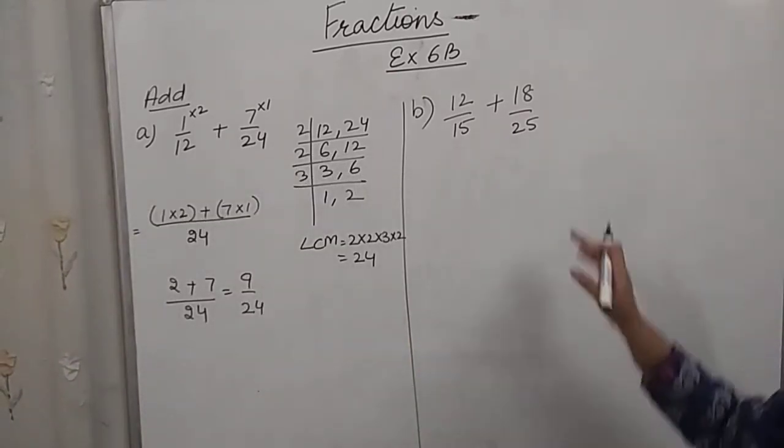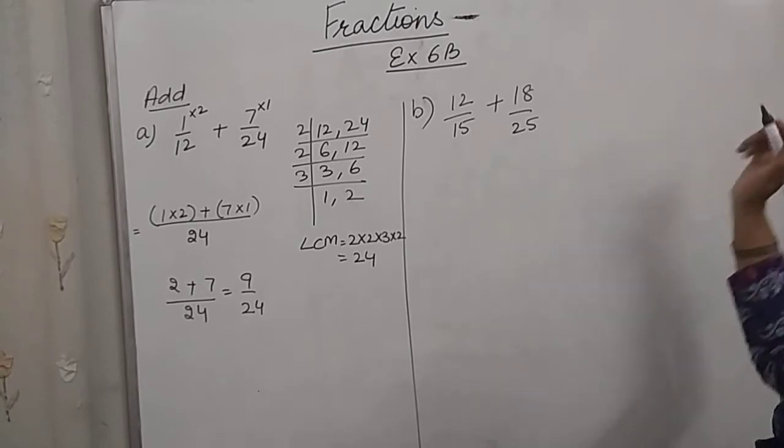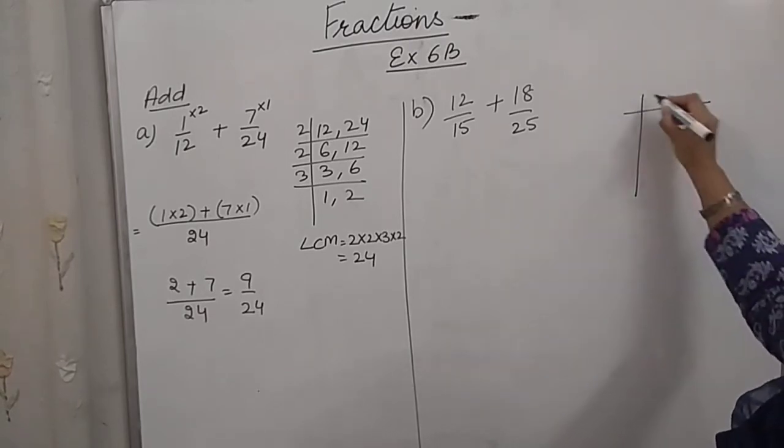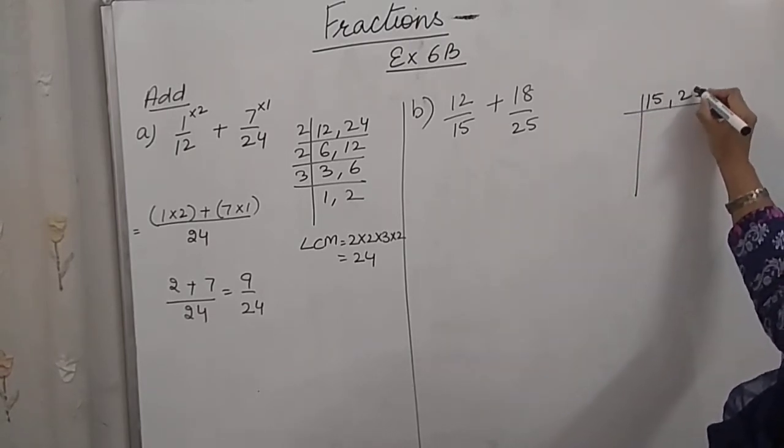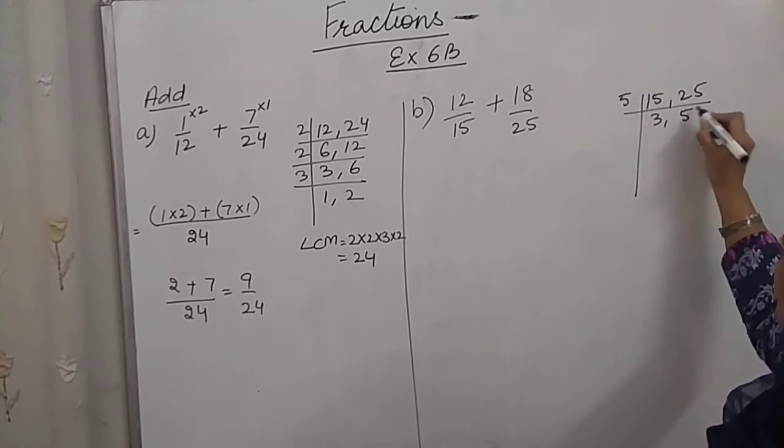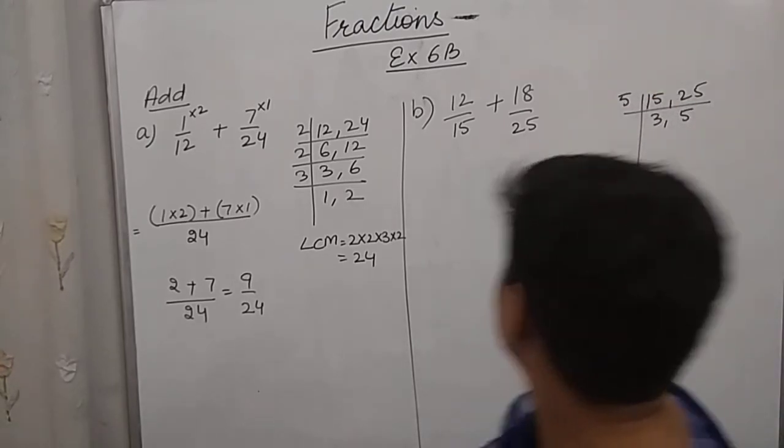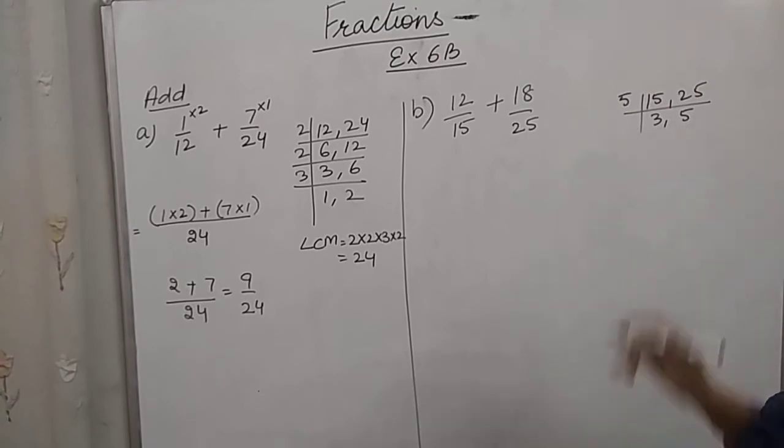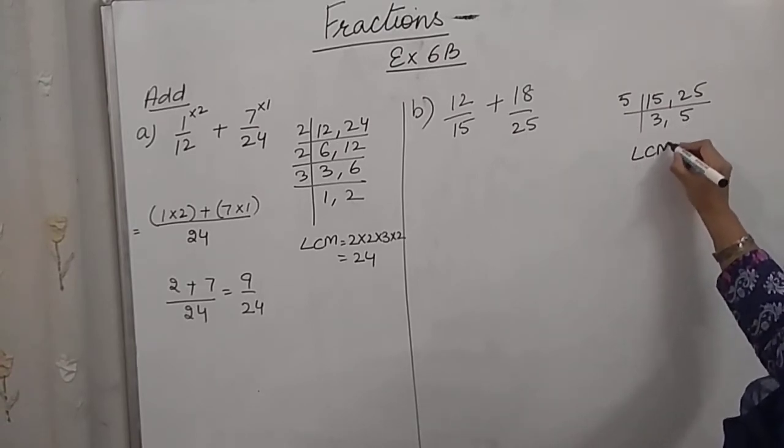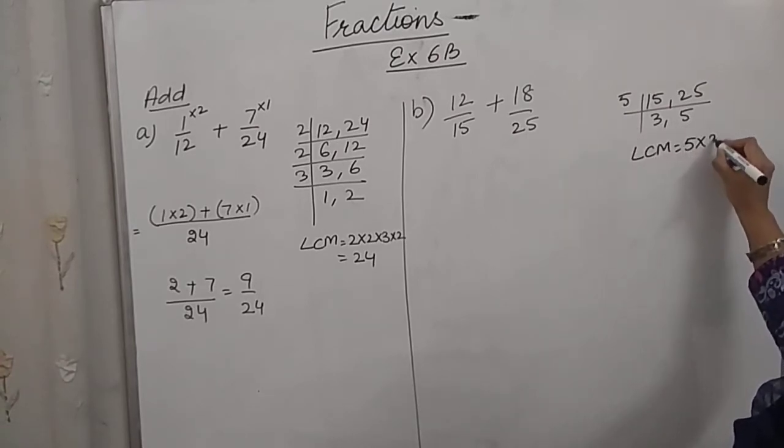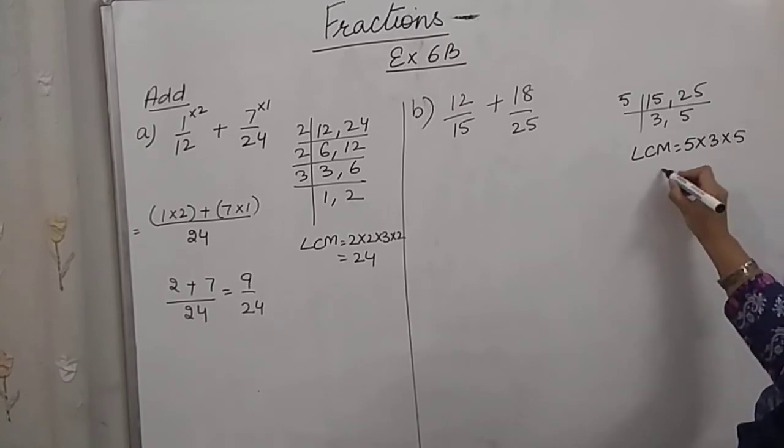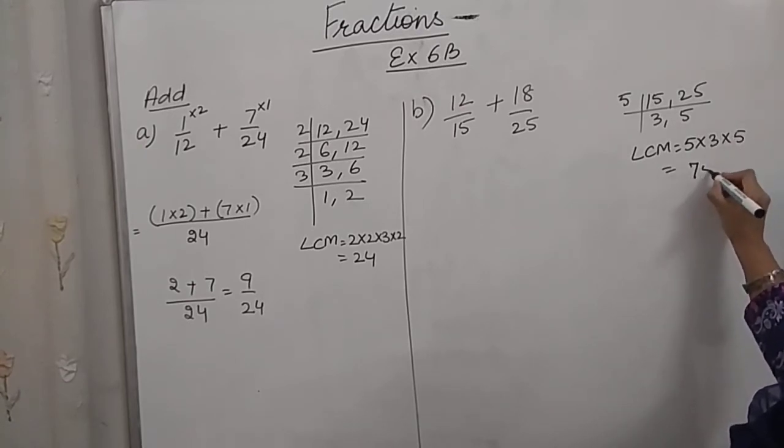Now next question, 12 by 15 plus 18 by 25. Let's find the LCM of 15 and 25. 5 into 3, 5 into 5. So LCM is 5 into 3 into 5, which is 75.